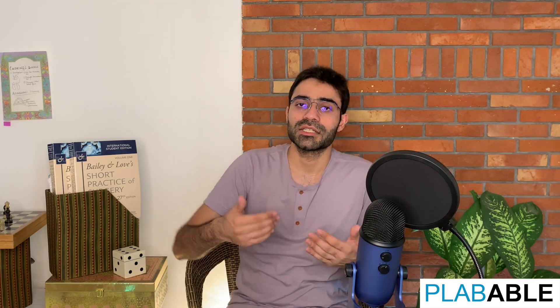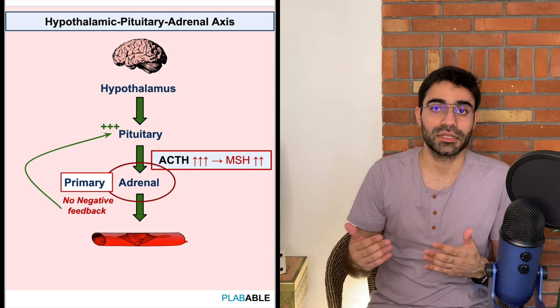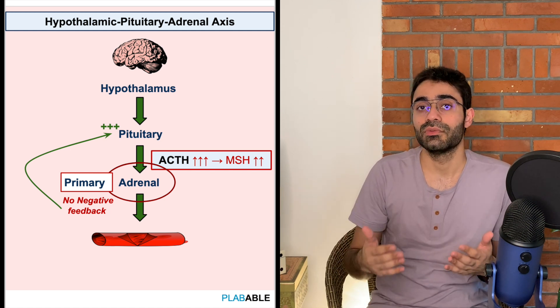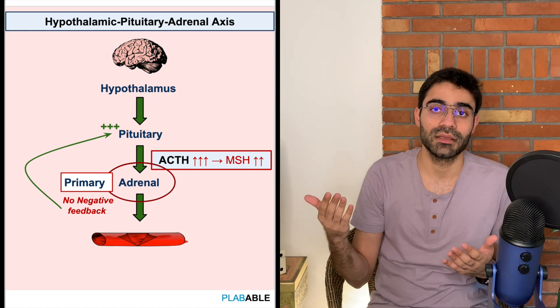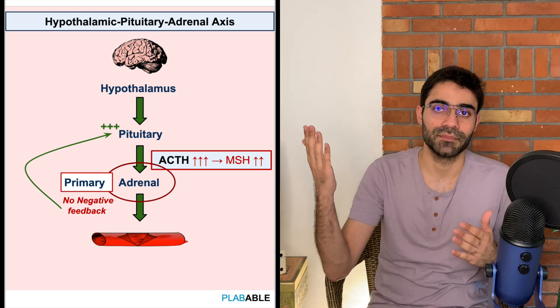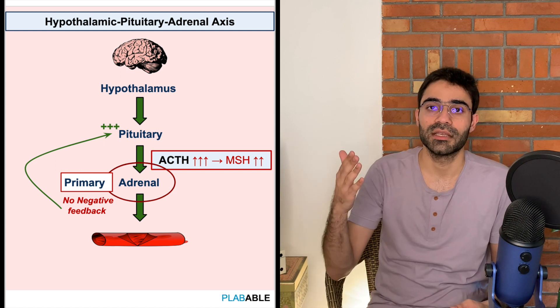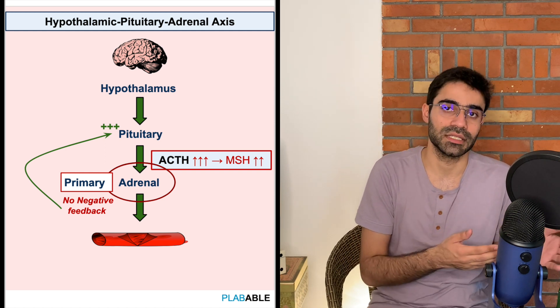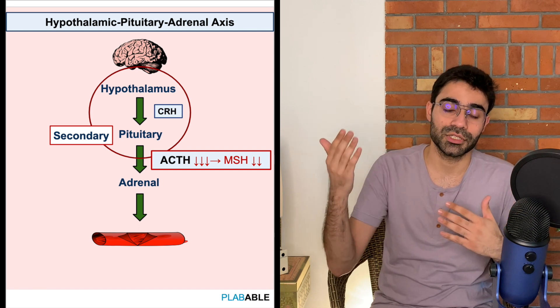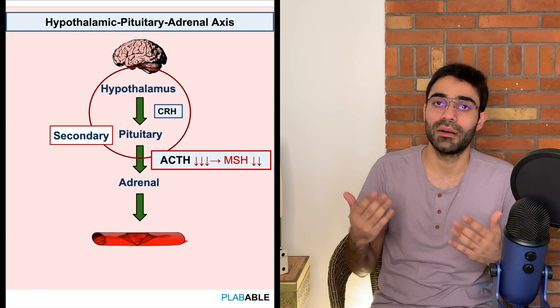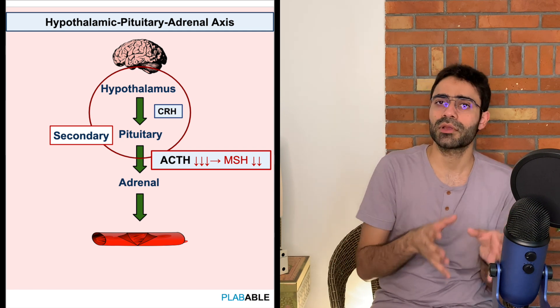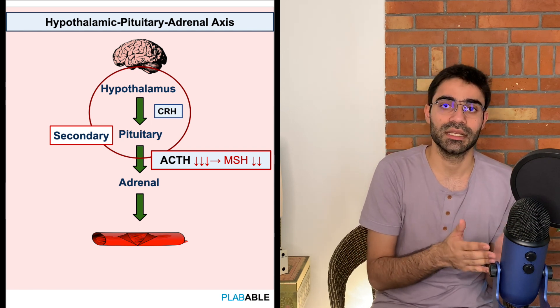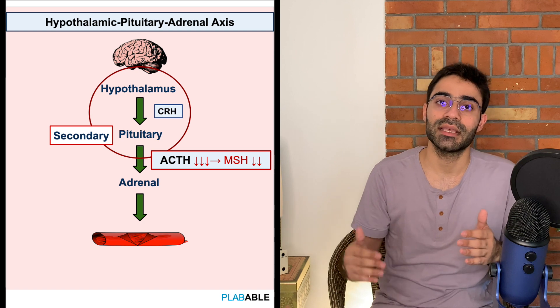An important clinical feature differentiating primary from secondary adrenal insufficiency is hyperpigmentation. In primary adrenal insufficiency, decreased cortisol leads to increased ACTH from the pituitary due to loss of negative feedback, which further increases melanocyte stimulating hormone, causing hyperpigmentation of skin creases. In secondary adrenal insufficiency, there is decreased ACTH and therefore no MSH production and no hyperpigmentation — this is a very important clinical distinguishing finding.